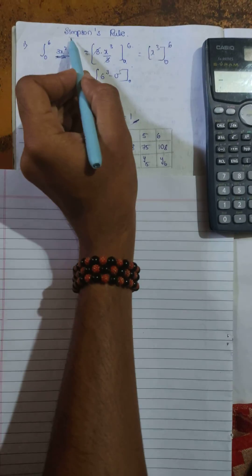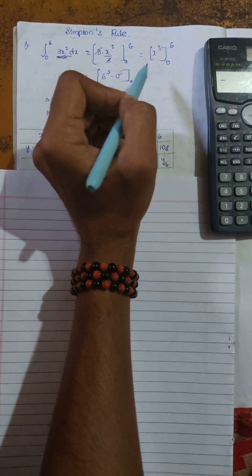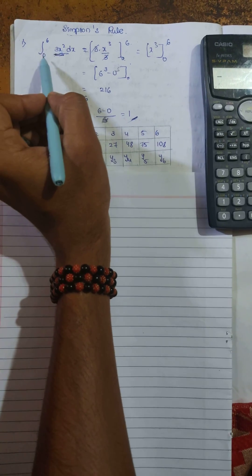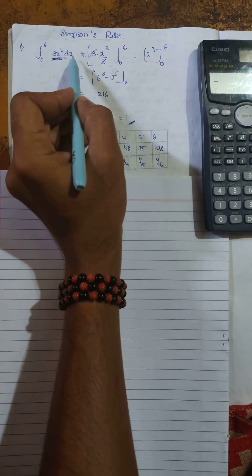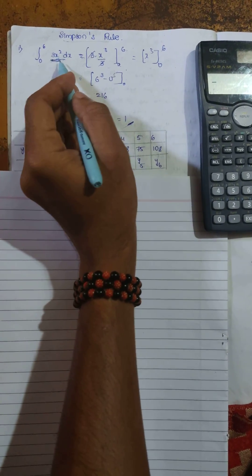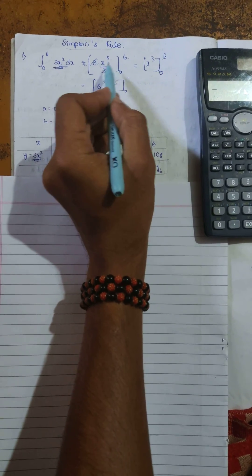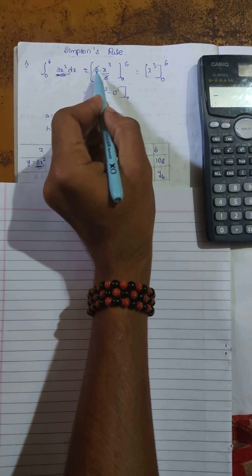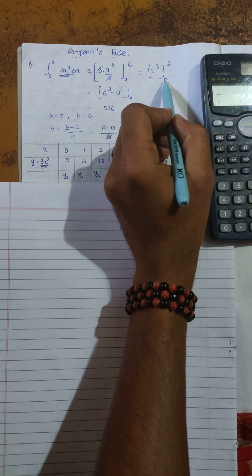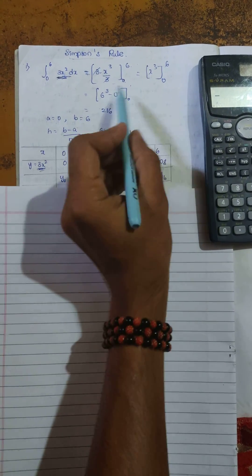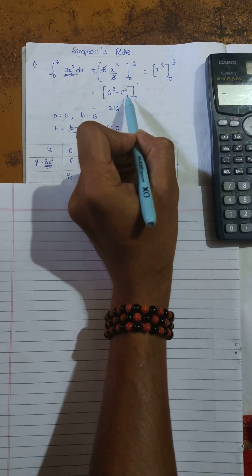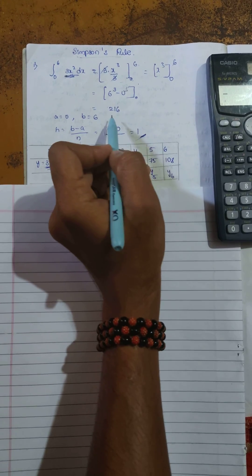Hello everyone, now I am solving Simpson's rule using a calculator. Integration of 0 to 6, 3x² dx equals the integration of x², which is 3 times x³/3. The 3s cancel, we get x³. Applying limits 0 to 6: 6³ minus 0³, where 6³ equals 216.